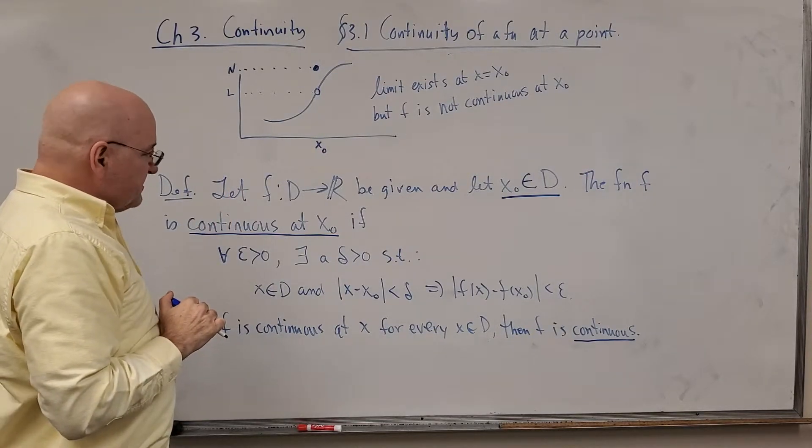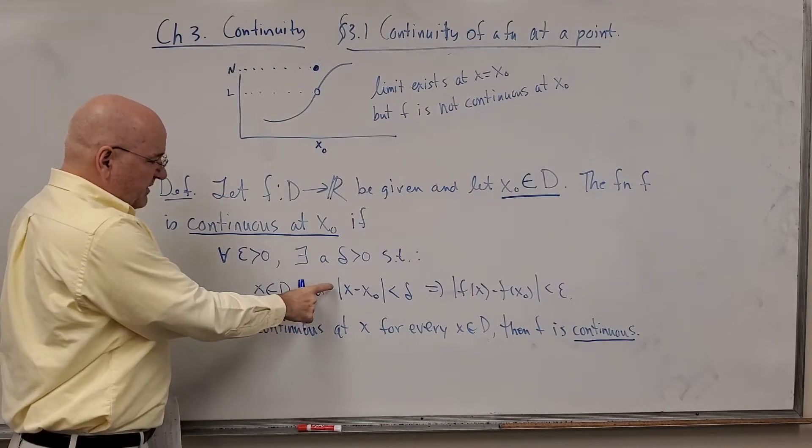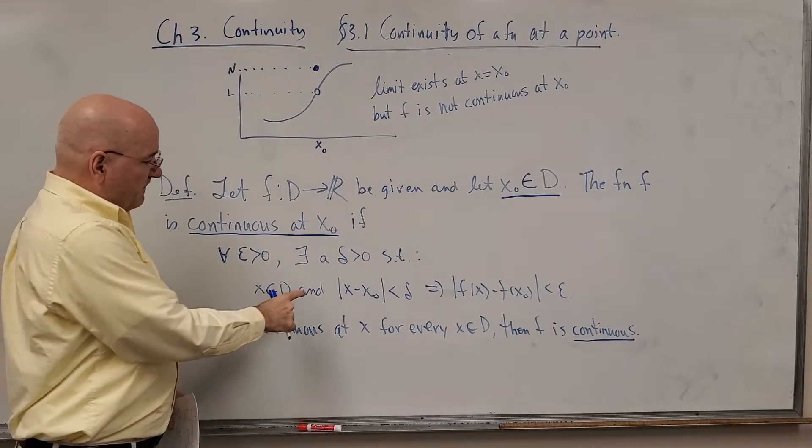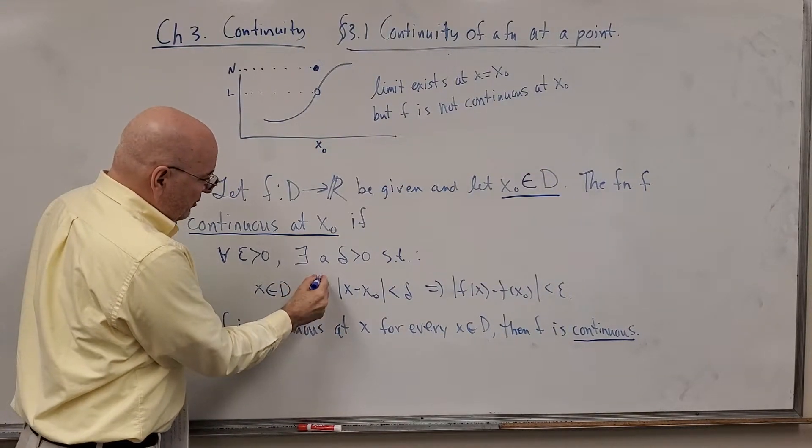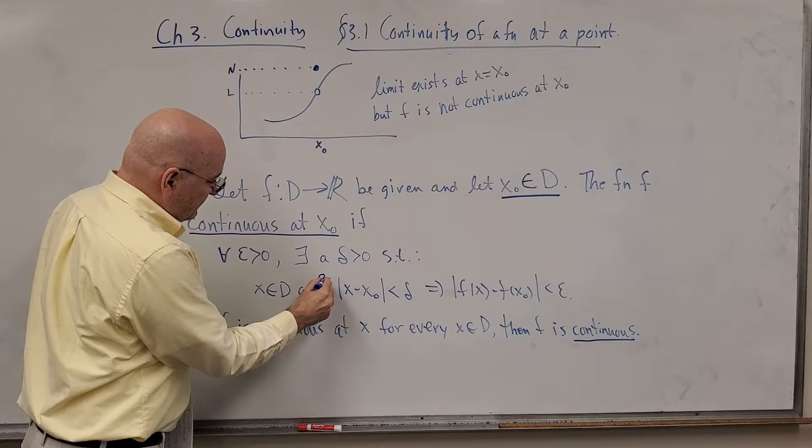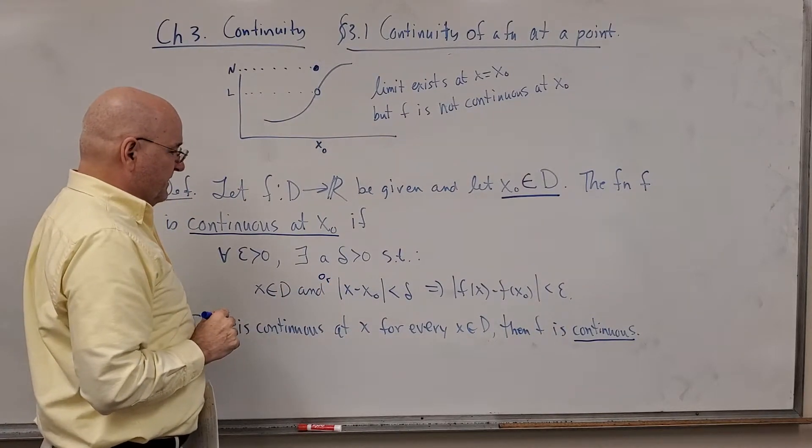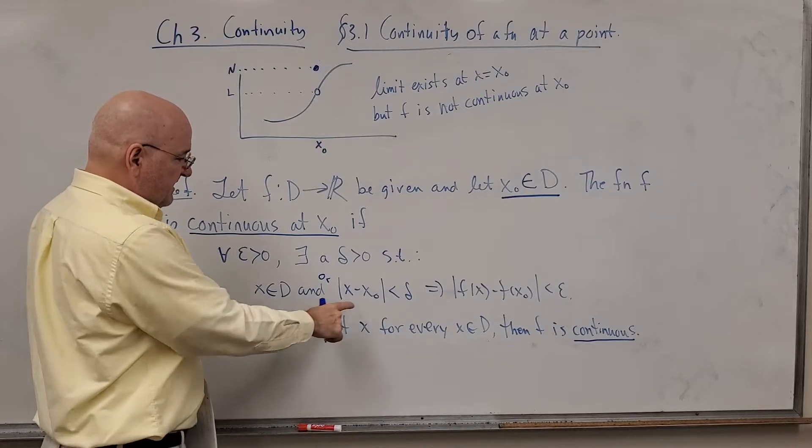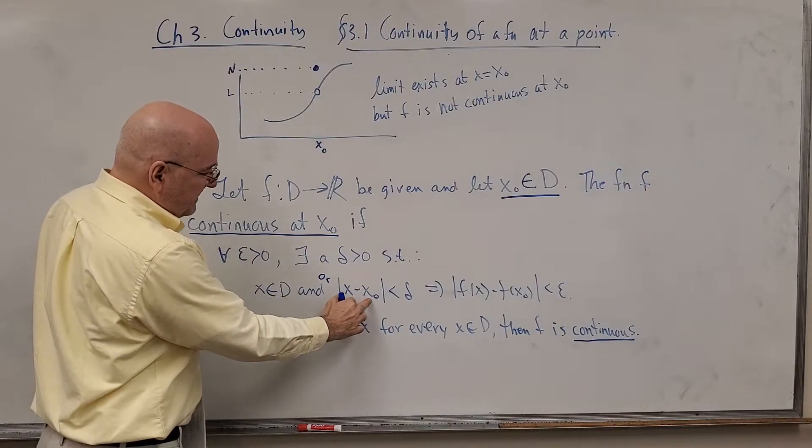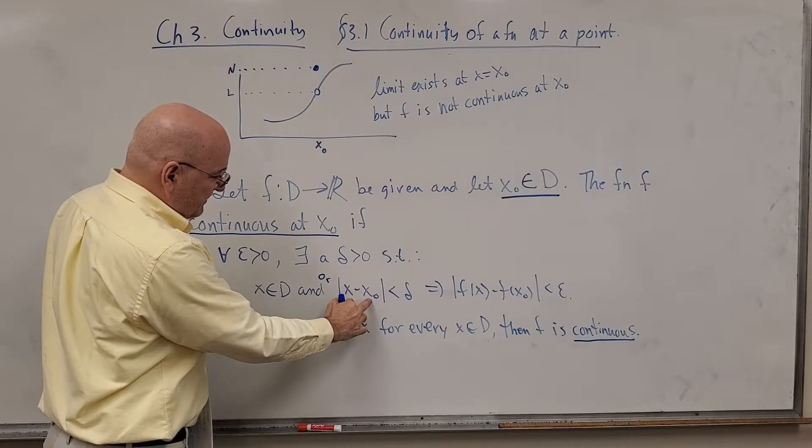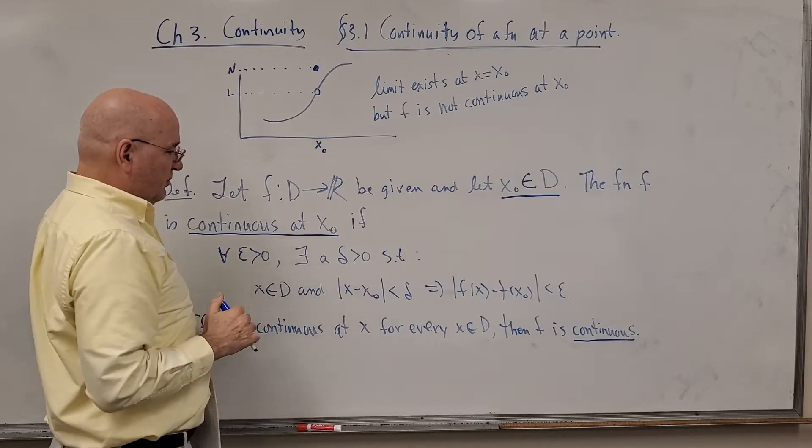That's one difference. And the other thing is right here. We're missing the zero. Don't write this down. Now, this was part of the definition of the limit existing at X naught. That implies that X and X naught cannot be equal to each other. Now they can be equal to each other.